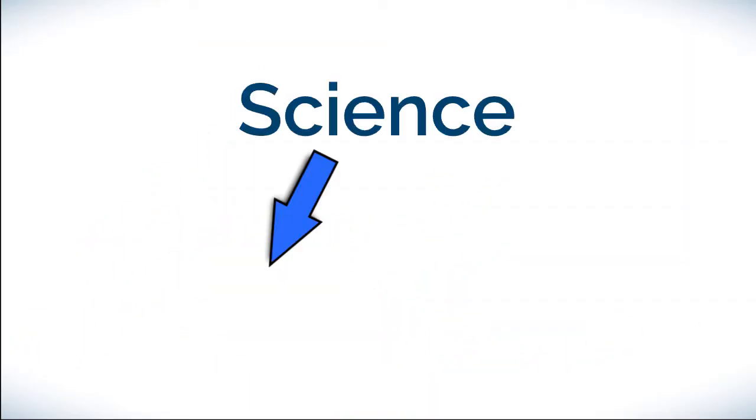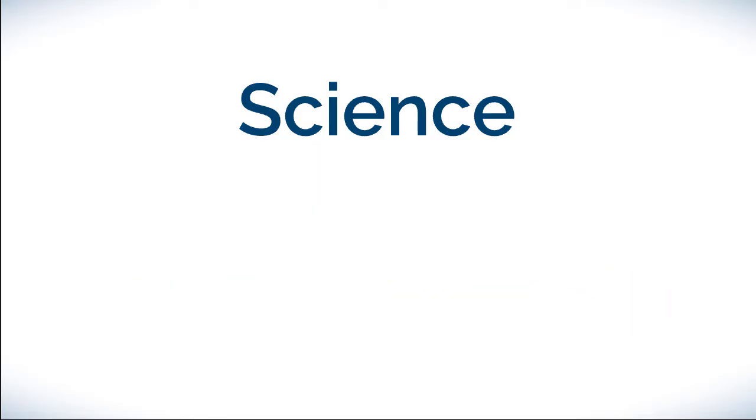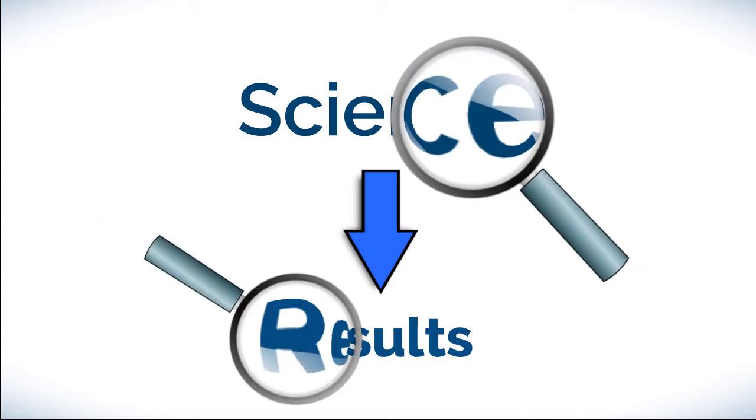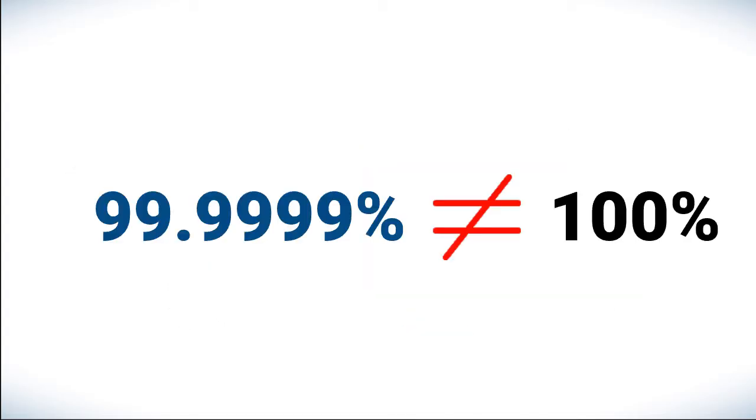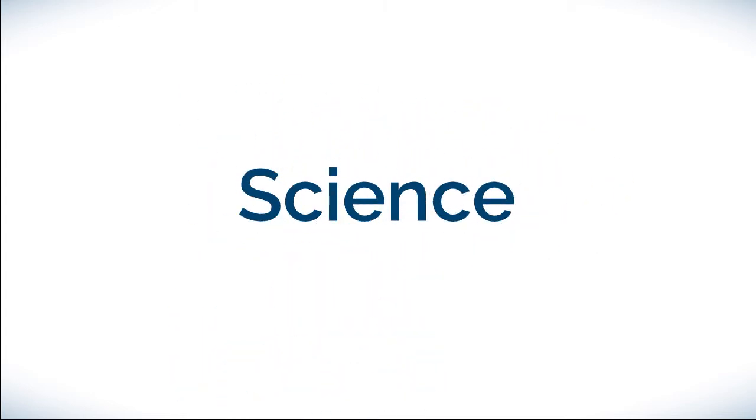Science even assumes its own methods and implementation could be flawed, and so it includes a never-ending review of itself and its results, which are never to be held absolutely 100% true. This makes science a self-correcting and self-improving process.